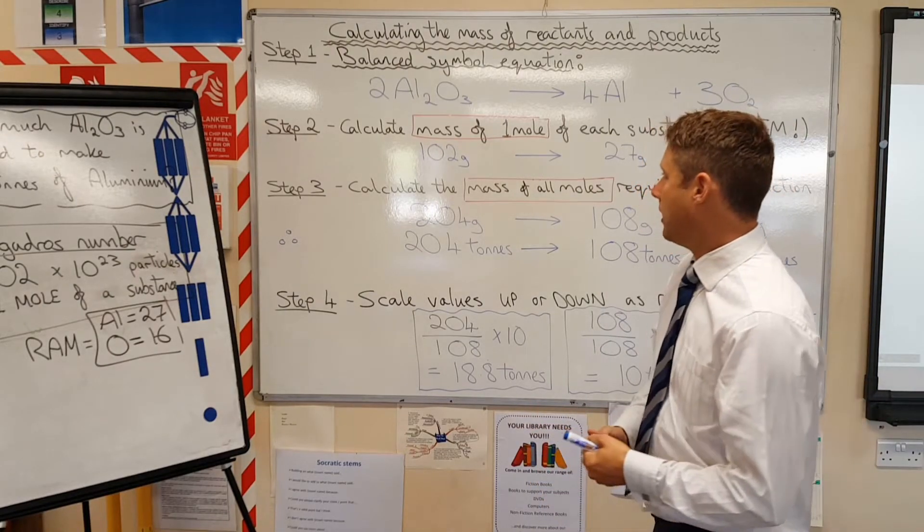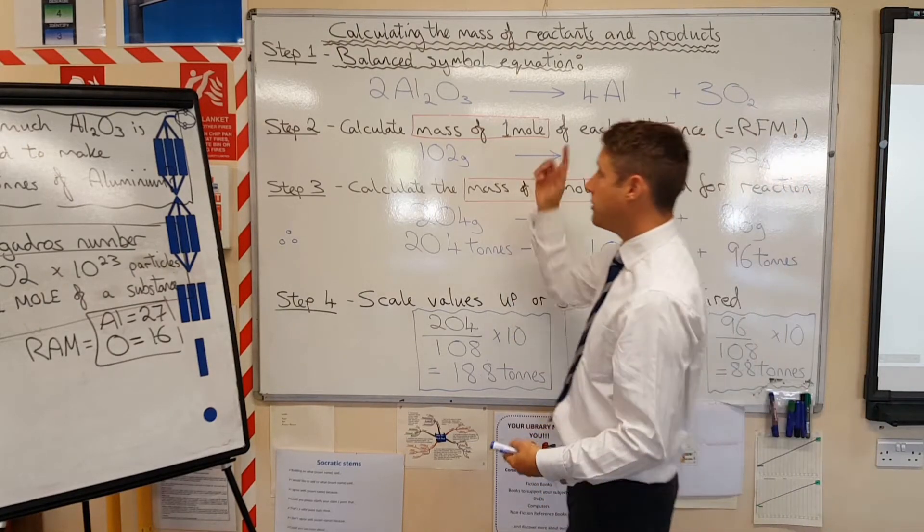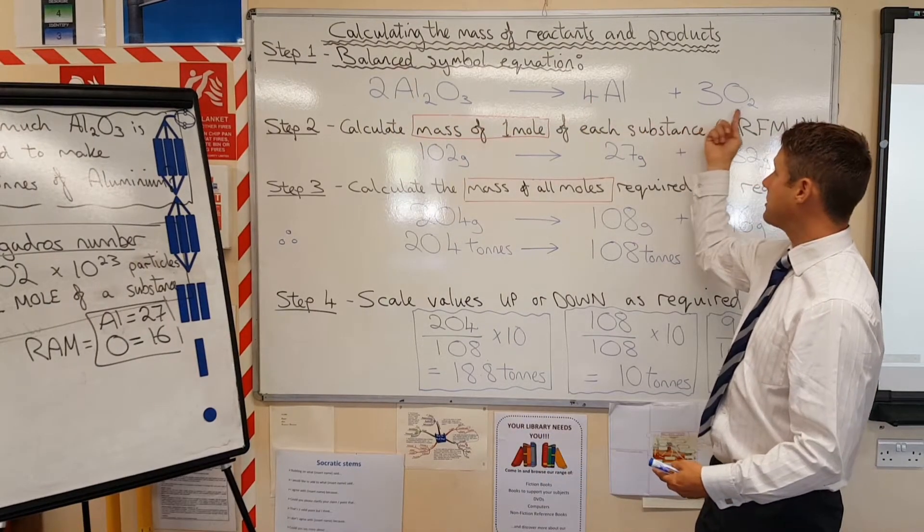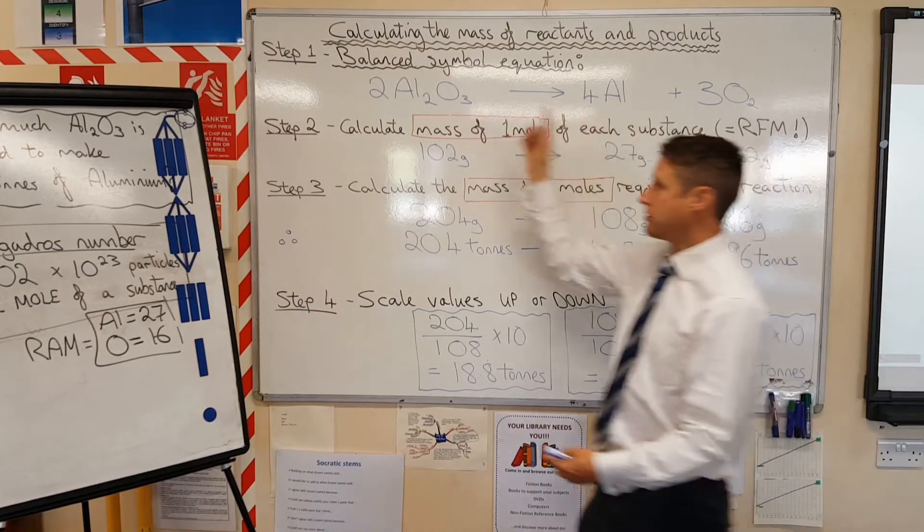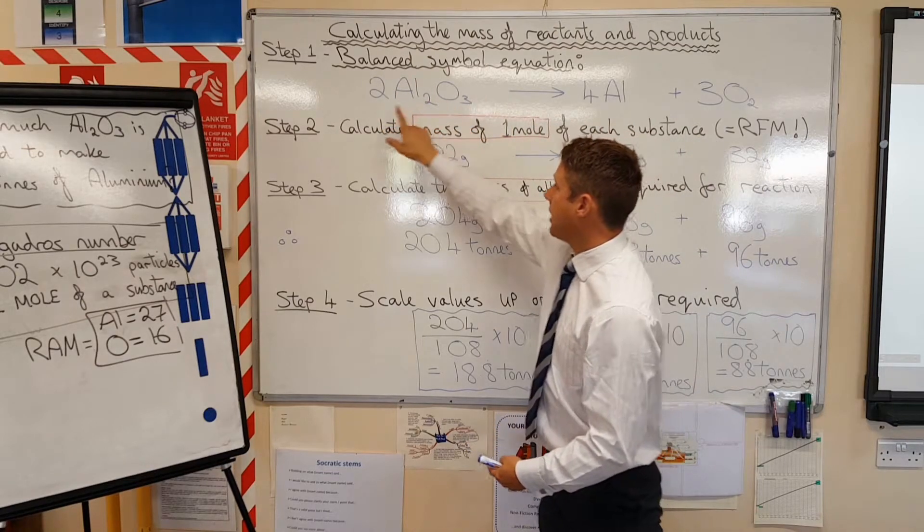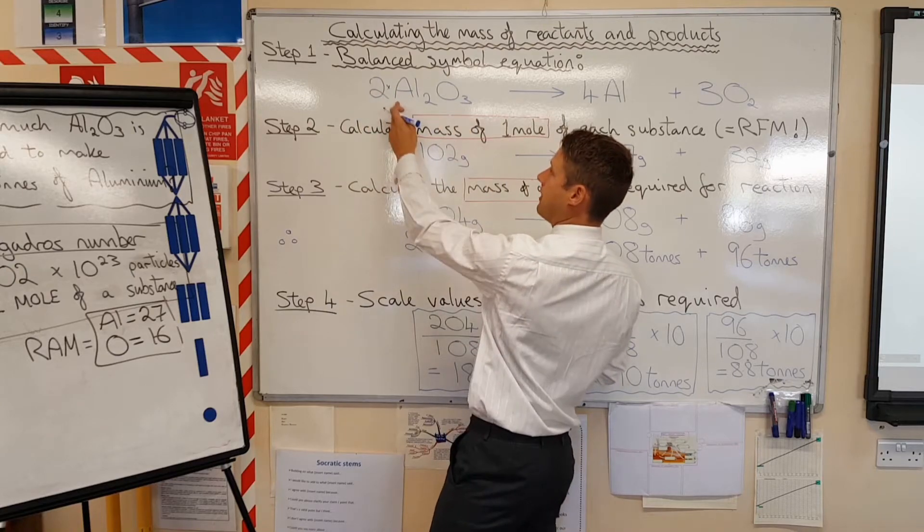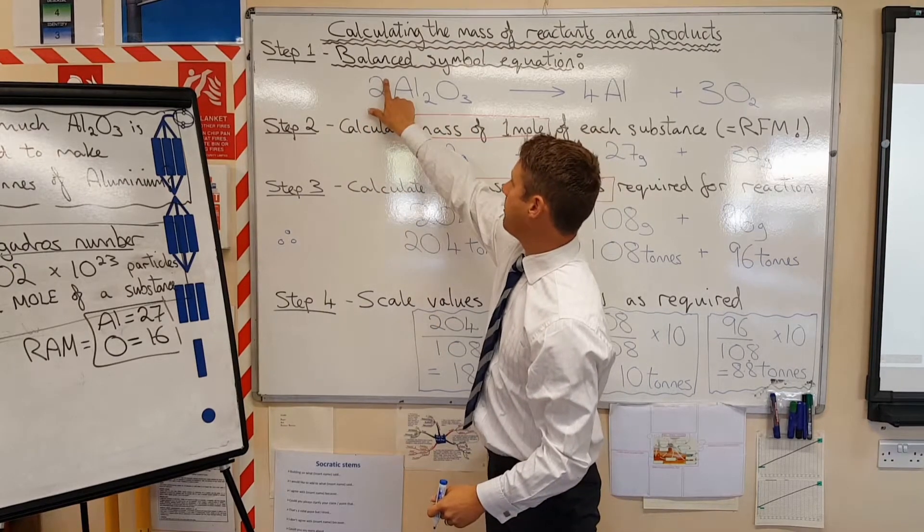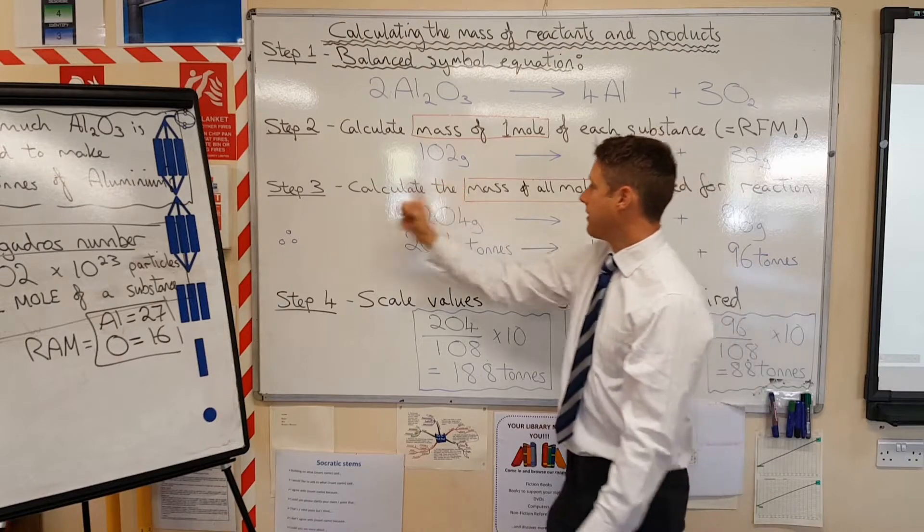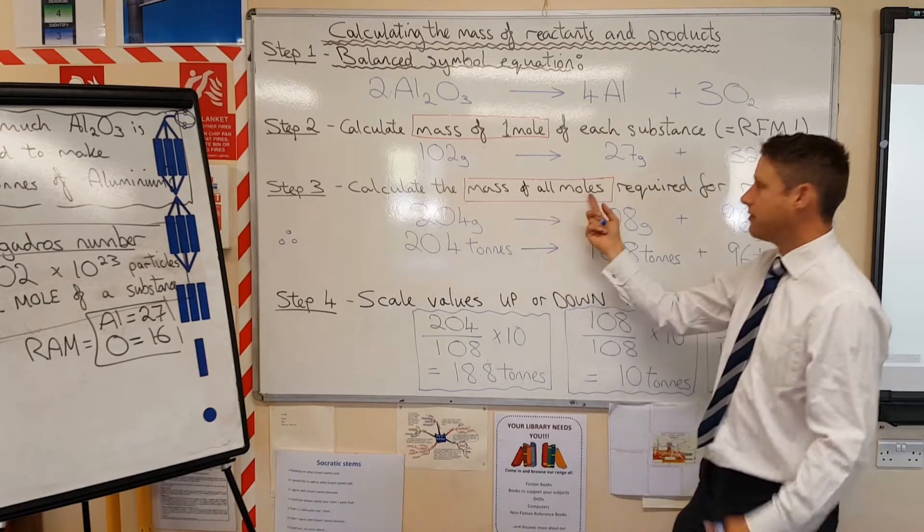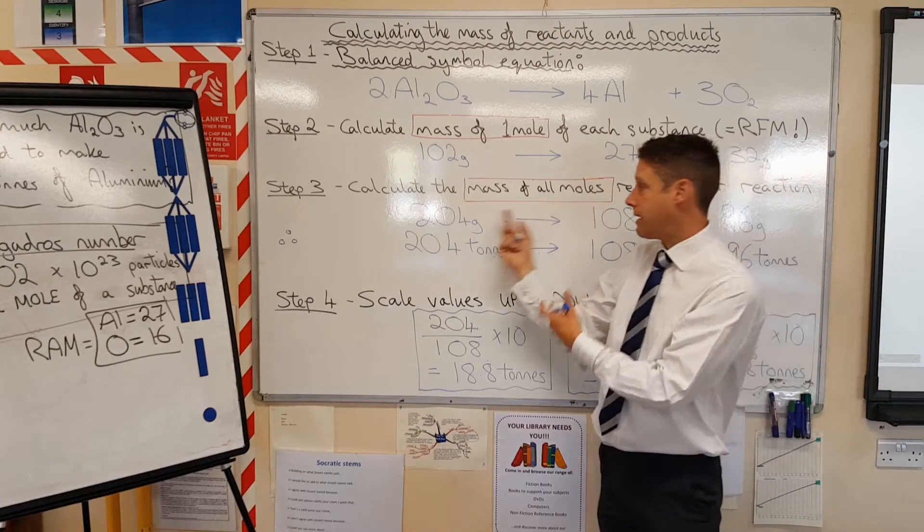So what do we do next? We need to actually factor in the total number of moles of each of the chemicals being used and being produced. Here, aluminum oxide, we need two moles. It's a bit like saying two lots of all of this. So we're going to have to double this number here, 102. That's why I've written 204 down here. Calculate the mass of all of the moles needed. This is our step three.